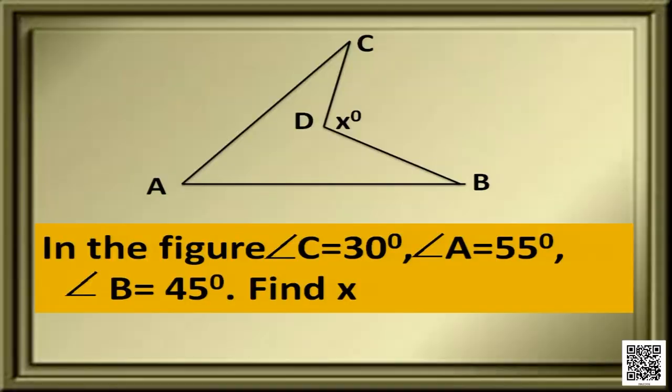The next question: in this figure, angle C is 30 degrees, angle A is 55 degrees, and angle B is 45 degrees. Find X.